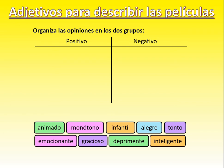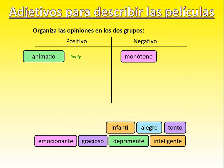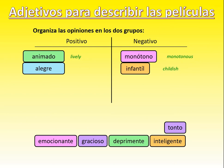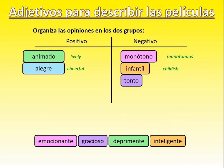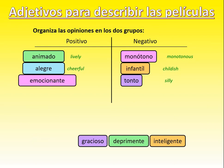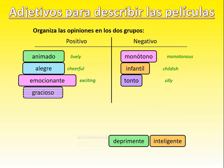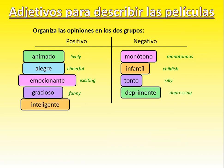The positives: 'animado' means lively. 'Monótono' is monotonous - another word for boring, something that is always the same. 'Infantil' looks like 'infant' - it means childish. 'Alegri' - if you play music you might have seen this at the start of a piece - it means happy or cheerful. 'Tonto' is silly or stupid. 'Emocionante' means exciting - be careful, it doesn't mean emotional. 'Gracioso' is another word for fun or funny instead of 'divertido'. 'Deprimente' is depressing, and 'inteligente' is intelligent - a nice word to use to describe a film as intelligent rather than just interesting.